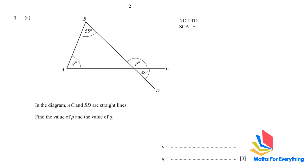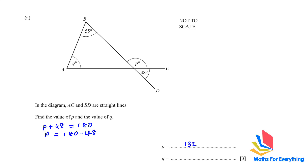Question number one is about angles and triangles. In the diagram, AC and BG are straight lines. Find the value of P and Q. Because it's a straight line, angles in a straight line equal 180. Therefore P plus 48 equals 180, so P is equal to 180 minus 48, which gives 132.